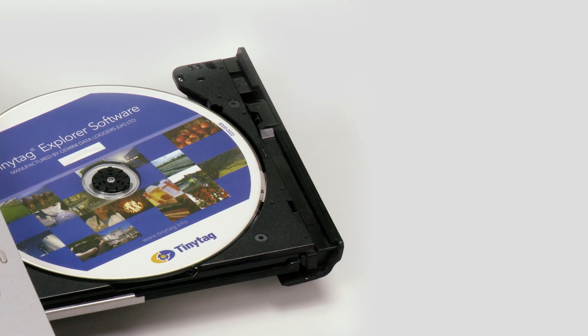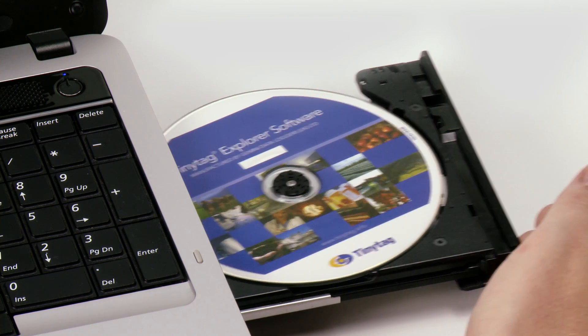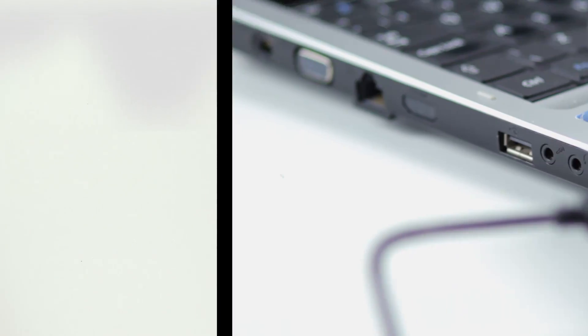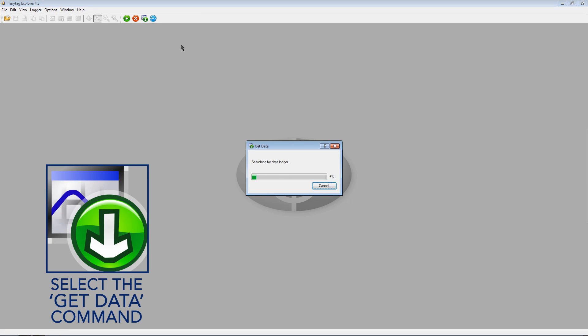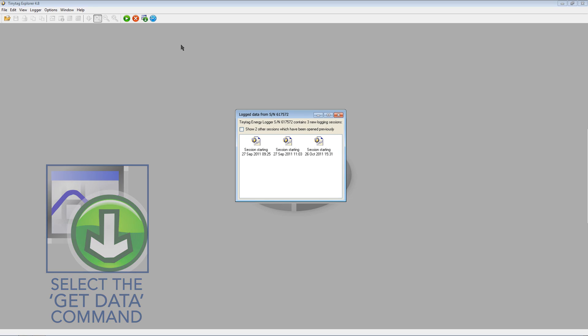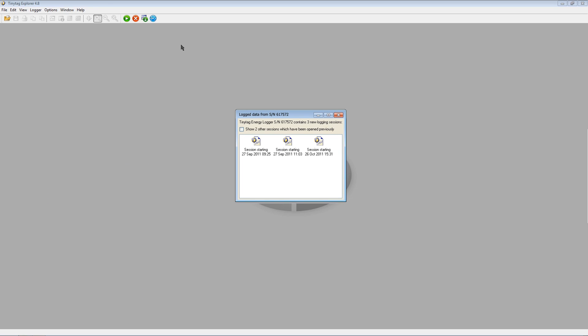To download and view the data, install the TinyTag Explorer software and plug the logger into the computer using the USB cable. Then select the Get Data command. A folder opens showing all the data files which are timed and dated for ease of identification.